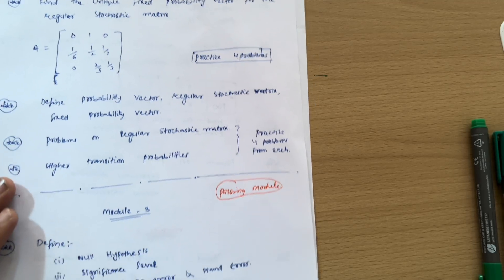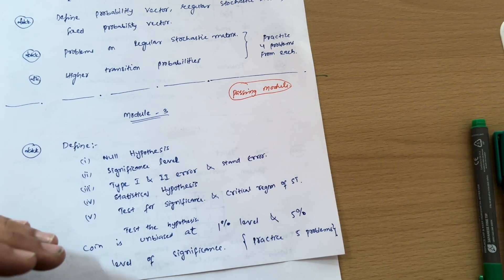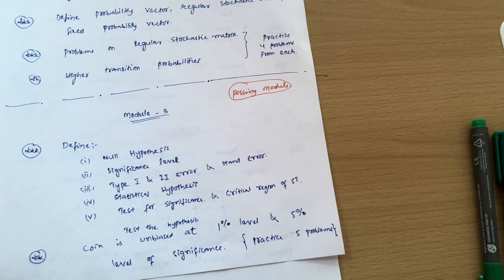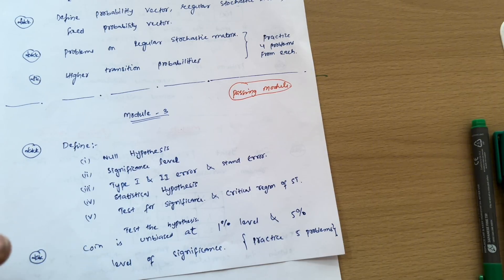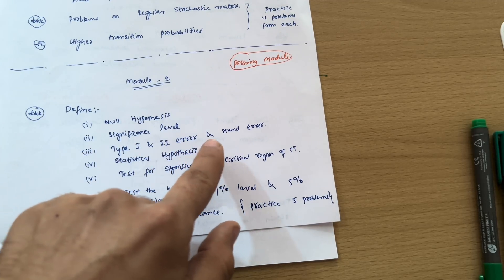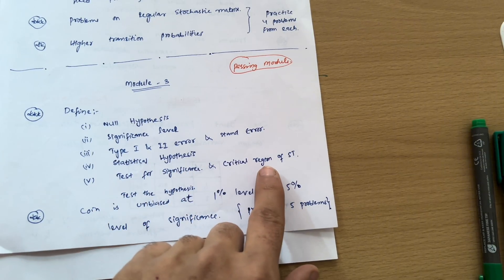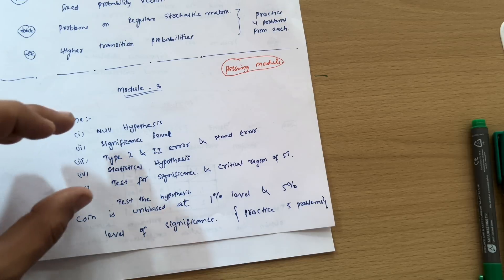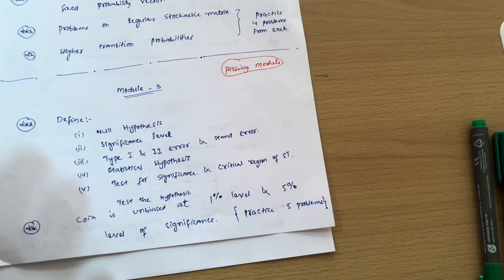Now coming to another passing module — Module 3. It is your choice to go through the theoretical portion, which is definitely 10 marks in the VTU examination, or you can go through its problem part. My suggestion is to go through the theoretical portions, which will surely fetch you 10 marks from theory, and the remaining 10 marks will be from problems. The theoretical topics are: null hypothesis, significance level, type 1 and type 2 error, standard error, statistical hypothesis, test for significance, and critical region. These five concepts you must cover — they will surely fetch you 10 marks.